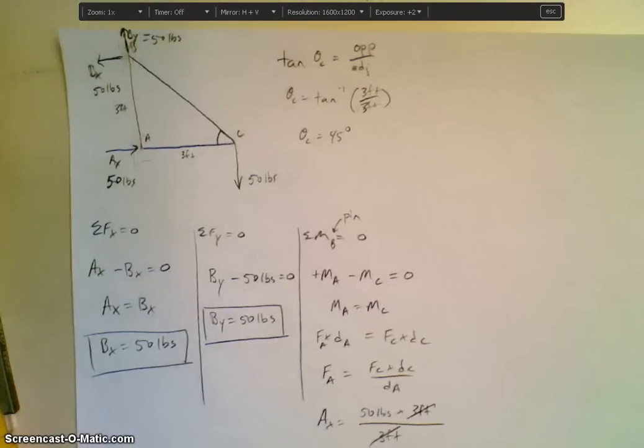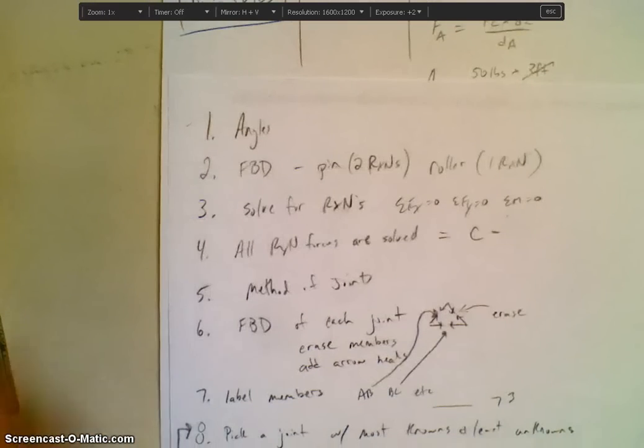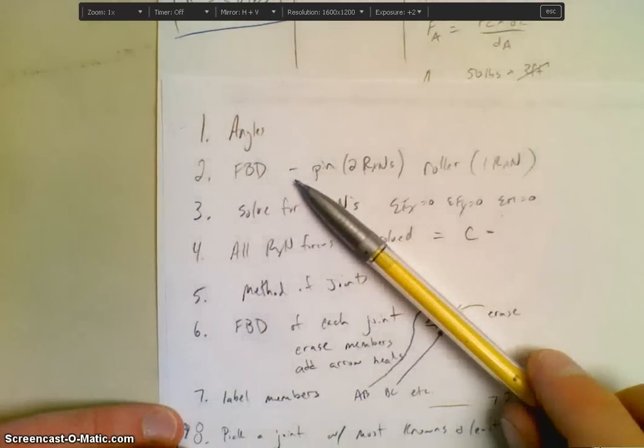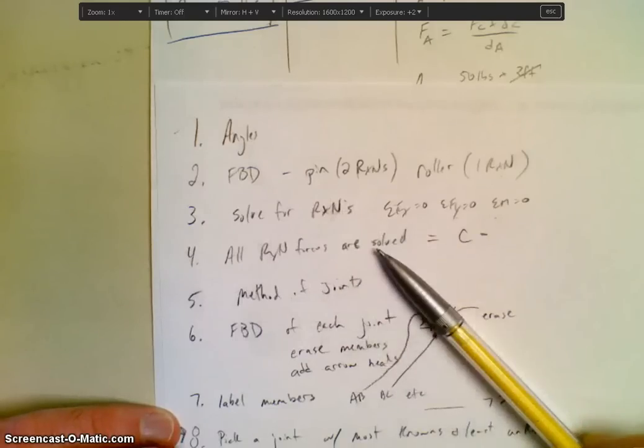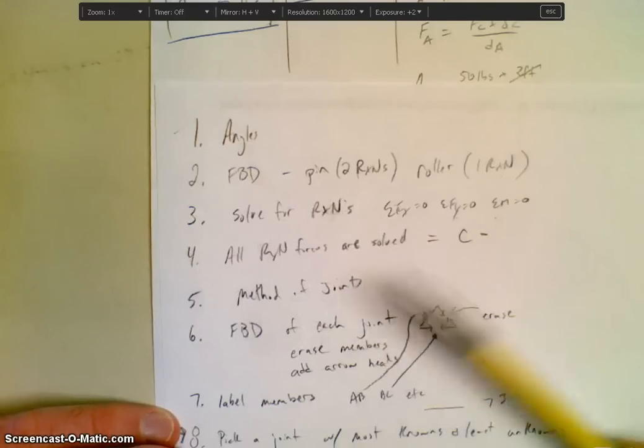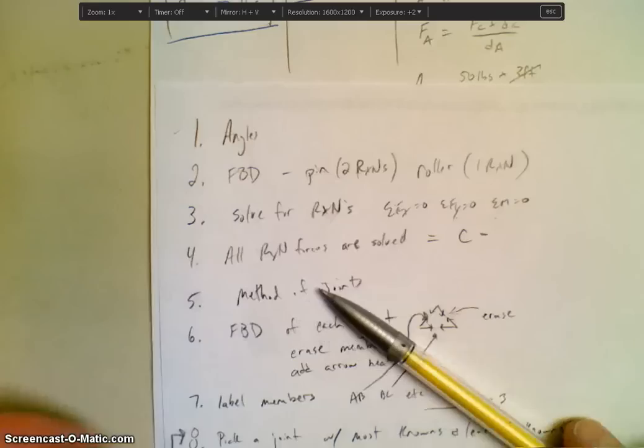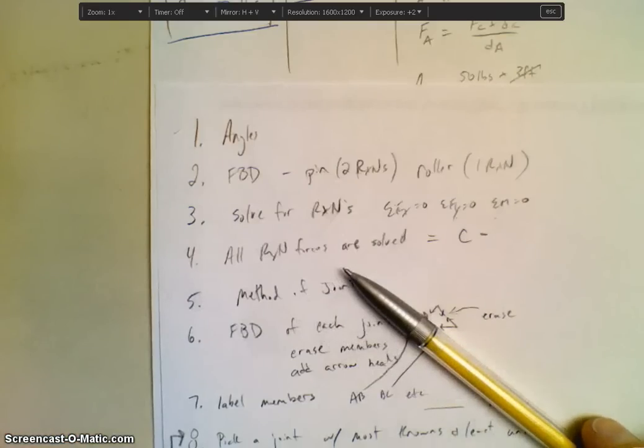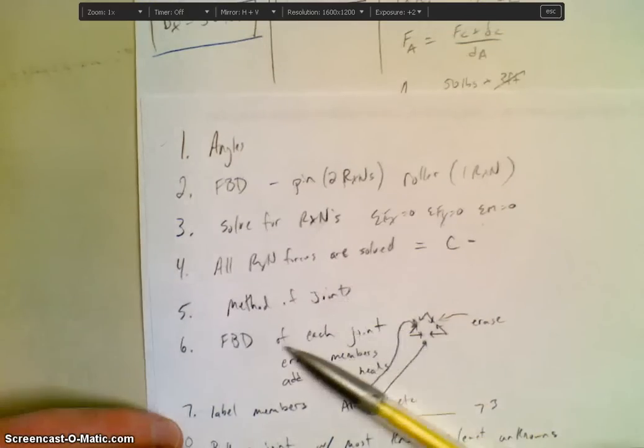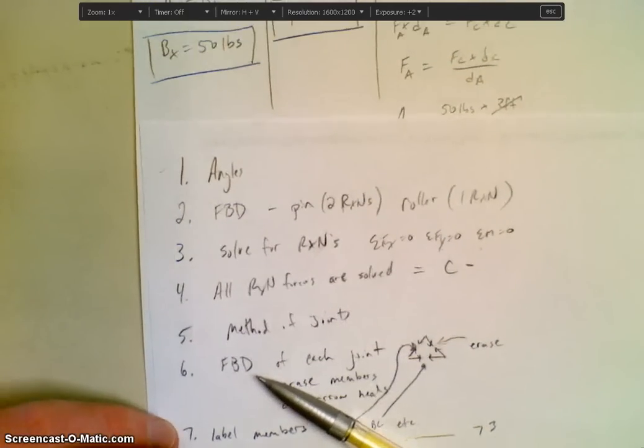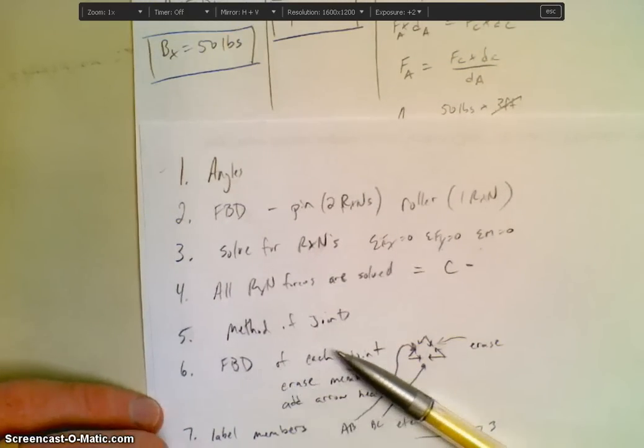Okay, this is part 2. We're going to be looking at the next step. So again, if we look here, we have done steps 1, 2, 3. We solved all the reaction forces. We now have AC. Great. We're on now step 5, method of joints, and we're ready to do method of joints. So let's look at our first step in method of joints. We want to first create a free body diagram of each joint.